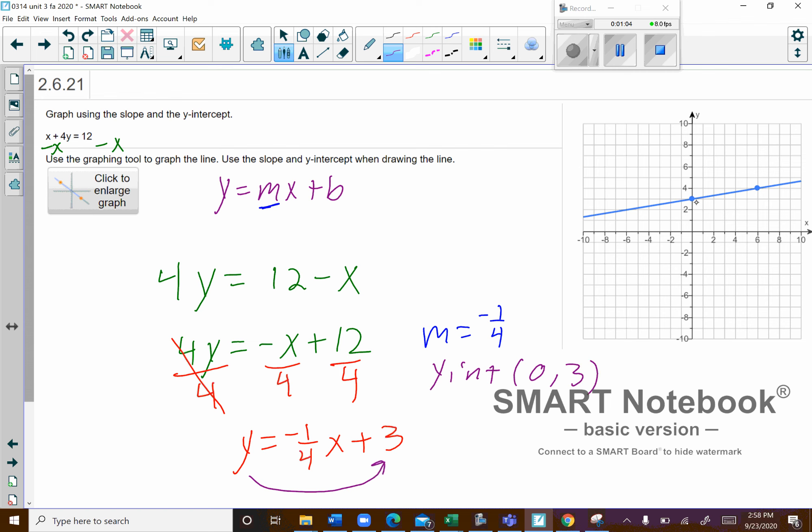So it looks like this is the line you graphed. So you have the y-intercept, but then the slope should have been down 1 over 4, so we should have been like that.